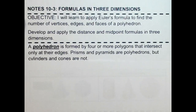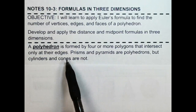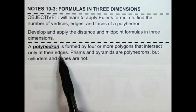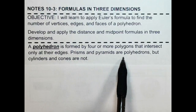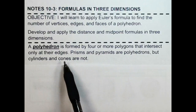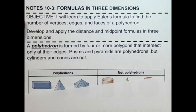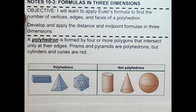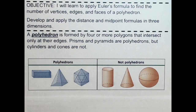So first, we need to define a polyhedron. It's formed by four or more polygons that intersect only at their edges. Prisms and pyramids are polyhedrons, but cylinders and cones are not. So here are some examples and non-examples of polyhedrons.